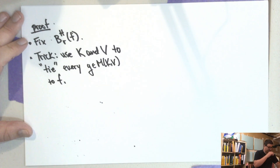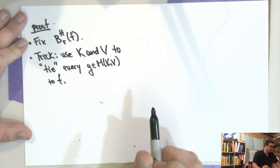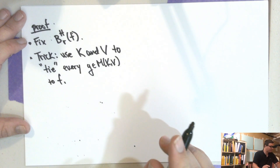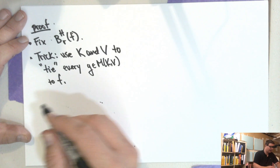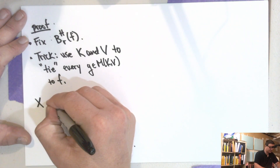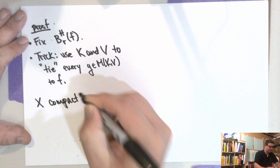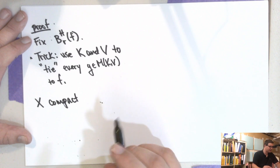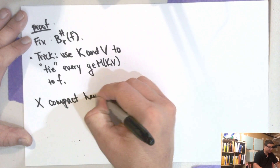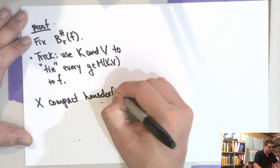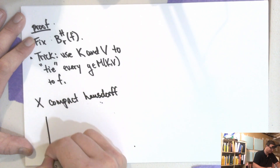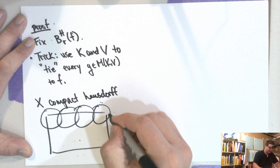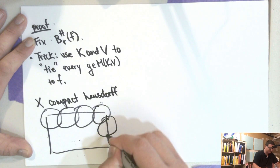We're going to use the compact Hausdorff hypothesis. We're going to do kind of an epsilon-delta argument, but because we don't have epsilon-deltas directly, we're going to use compactness instead. So we take X and cover it by a bunch of open sets — a finite cover.